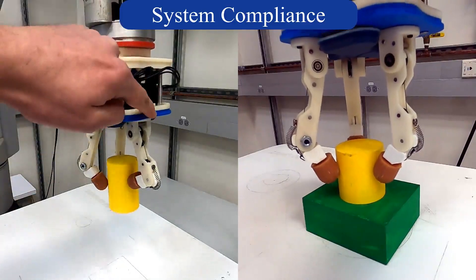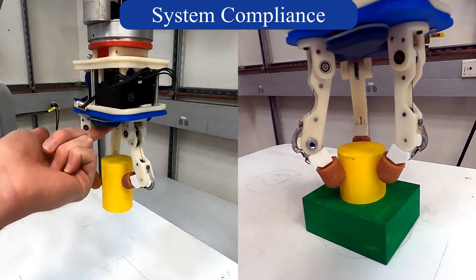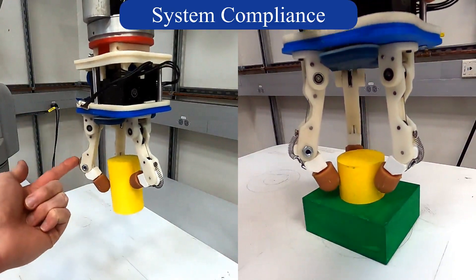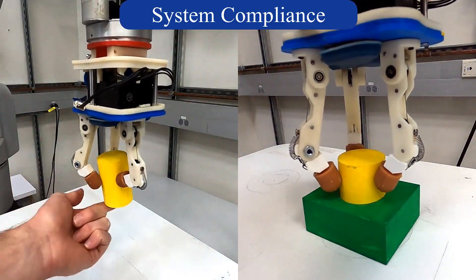In this work, we address the problem of precisely controlling compliant mechanisms, more specifically a low-impedance manipulator and an under-actuated hand, for tight tolerance and open-world insertion tasks.